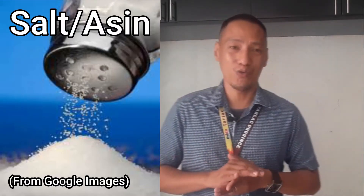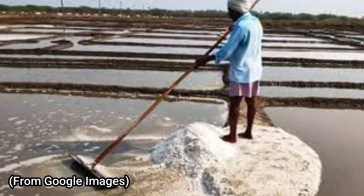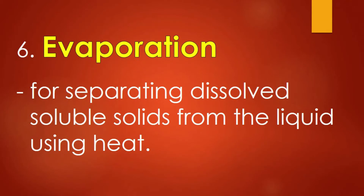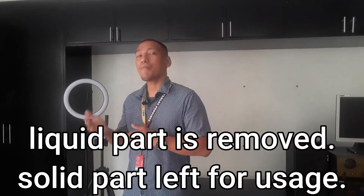Now, the group using temperature. Number six: evaporation. Do you know how salt is made? Salt comes from seawater, which is collected and left to dry under the heat of the sun. When the water evaporates, solid salt granules are left behind. This process is evaporation — a method of separating dissolved soluble solids from a liquid using heat. The heat source doesn't have to be the sun; any heat source works, like a stove. You heat the liquid until it evaporates, and what remains is what you need.